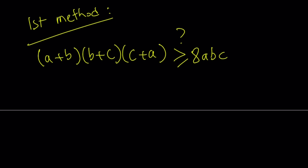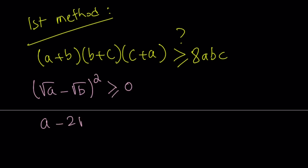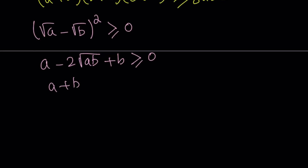We know that ABC is positive. We know that no square is negative, so I can safely say that (√A − √B)² is always greater than or equal to 0. Let's expand the left-hand side: we get A minus 2√(AB) plus B is greater than or equal to 0. Rearranging, A plus B is greater than or equal to 2√(AB). That is the AM-GM inequality — the arithmetic mean and geometric mean for positive real numbers.